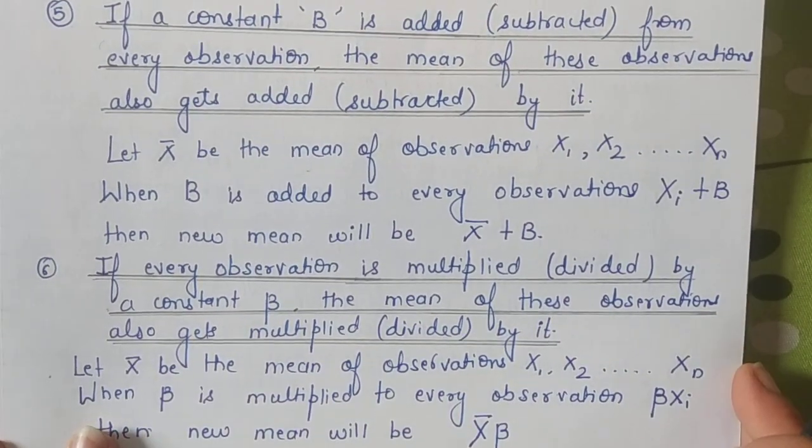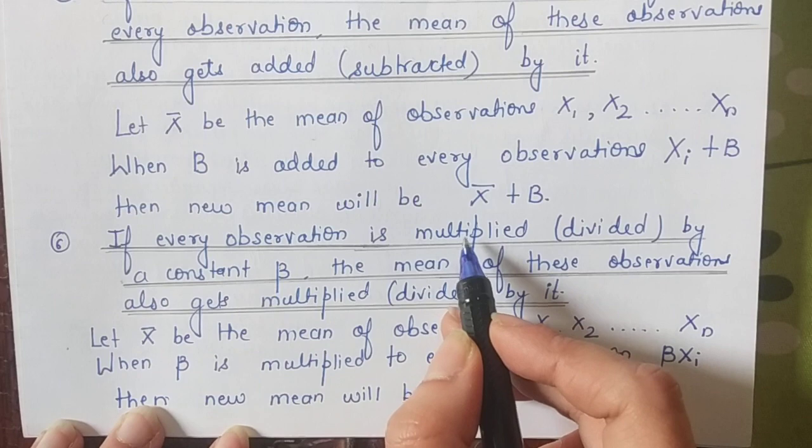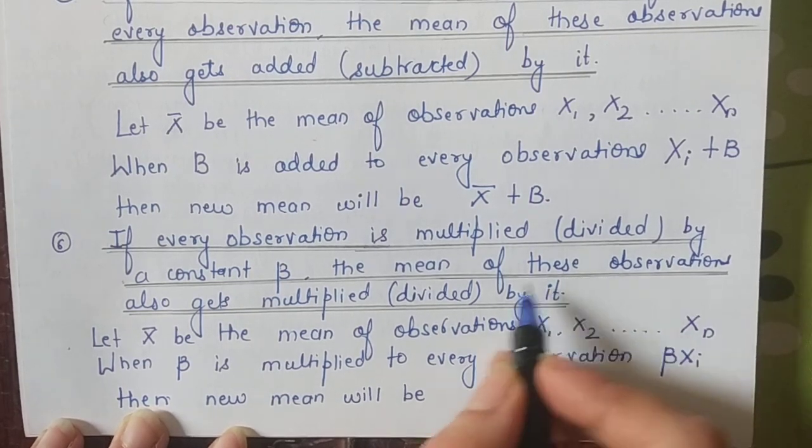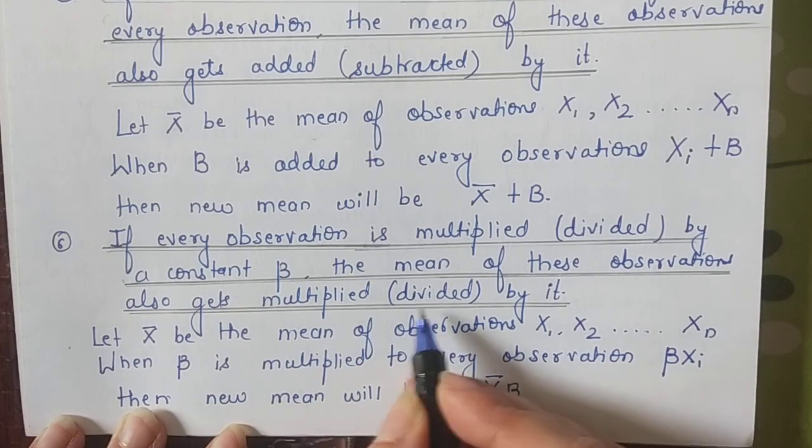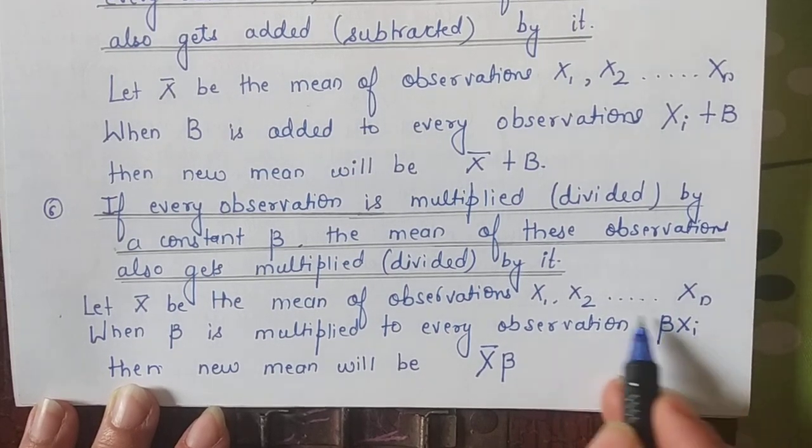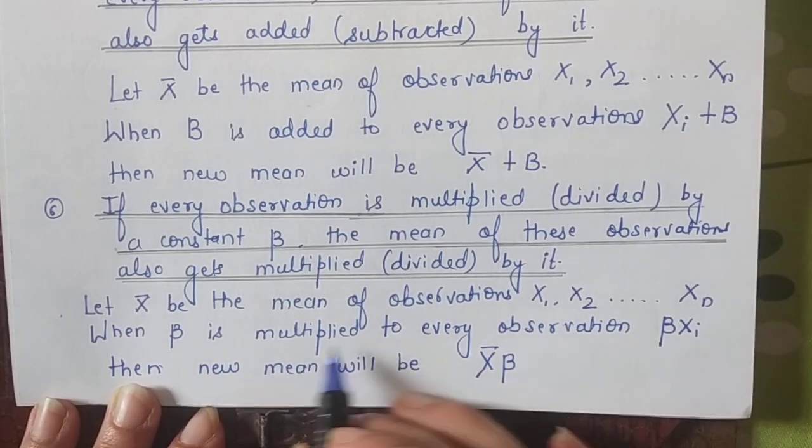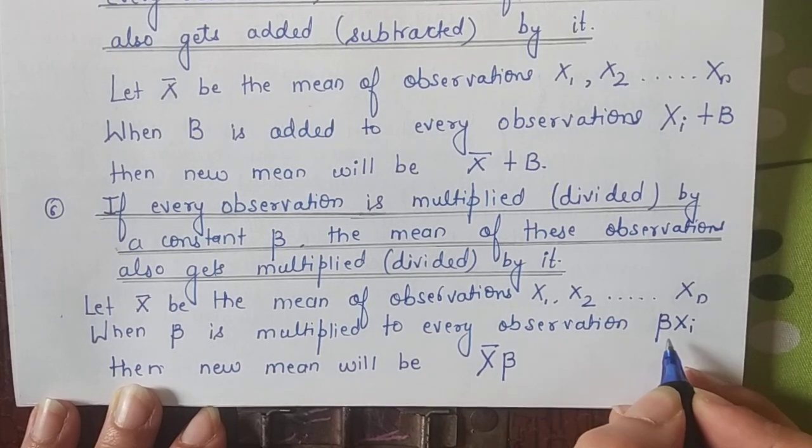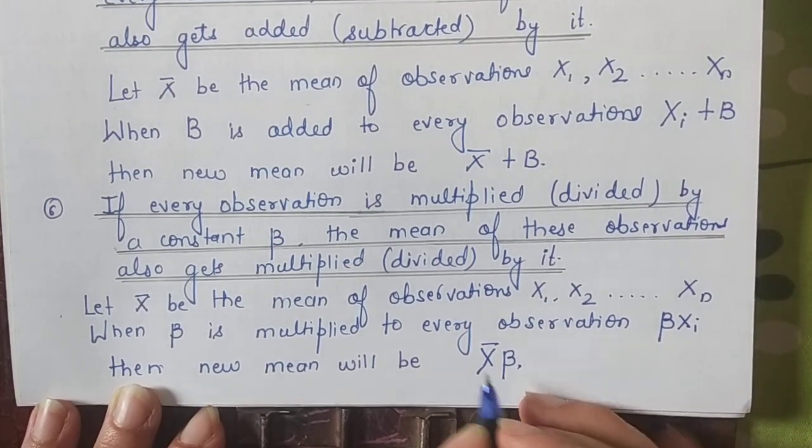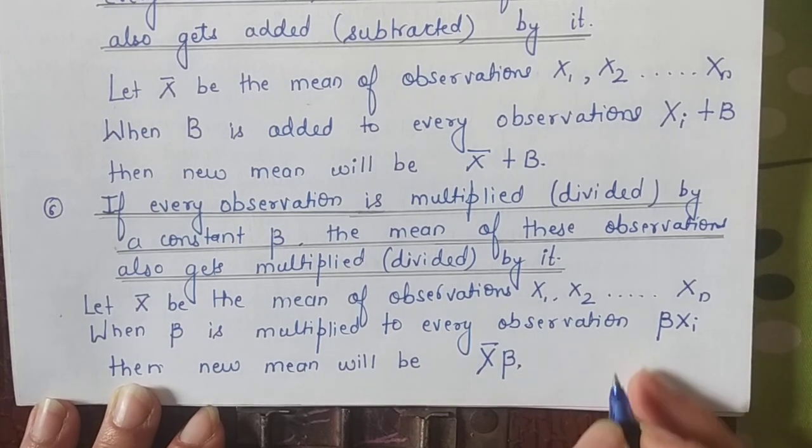Similar property exists for multiplication and division. If we multiply or divide every element of the series by a number, suppose beta, then the mean will also be multiplied or divided by beta. If observations were x₁, x₂, x₃...xₙ and we multiply all by beta, the new series becomes βxᵢ. When you calculate the new mean, it will be βx̄. And if you divide all elements by beta, the mean will be x̄/β. So this was the 6th property.